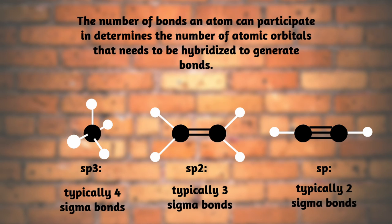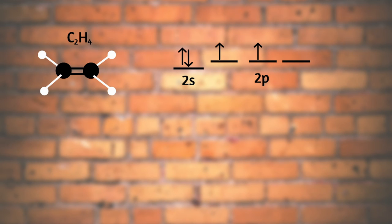Now let's look at an sp3 carbon, which we just looked at. It typically participates in four sigma bonds, just like methane. But carbon can also be sp2 or sp hybridized. Now the sp2 hybridized orbitals have three electron domains which might happen if it has a bond to something. Let's look at C2H4.